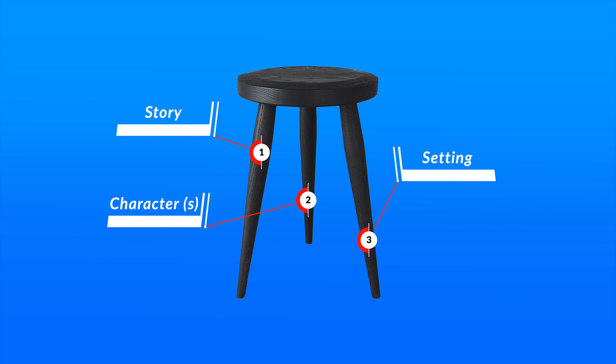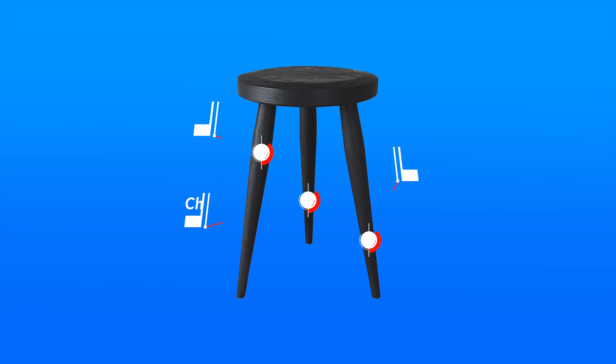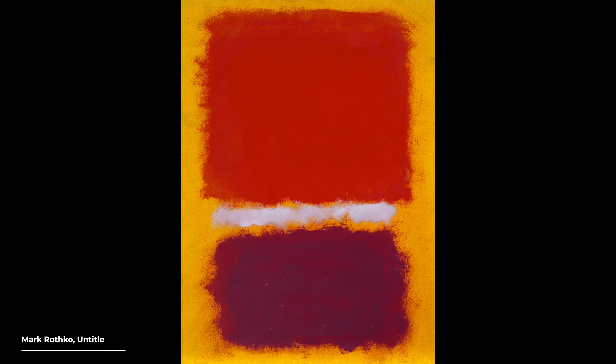So in the structure column, the first three by threes are: dimension, surface, and grids. Now let's look at the second three by threes in the itinerary column. You can think of this as the journey — where's the setting, who are the characters, and what is the story that's happening? All three of these are very much intertwined, so we'll be talking about them collectively.